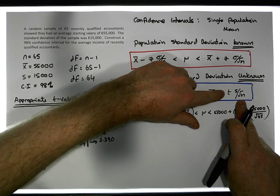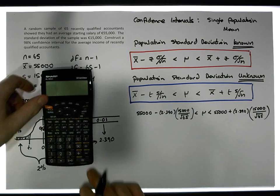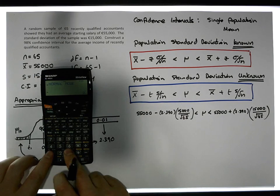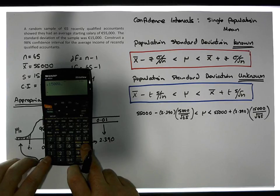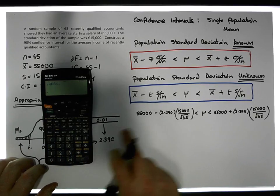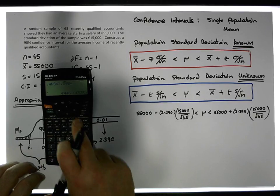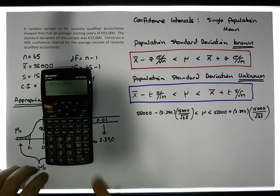I'm going to do 15,000 euros divided by the square root of 65, multiplied by 2.390. That gives me a value of 4,460.64, which is about 4,447.